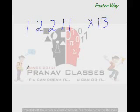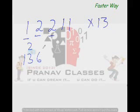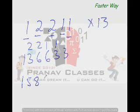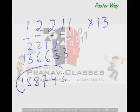What would 12,211 times 13 be? From left to right: 1×13 is 13, 2×13 is 26, 2×13 is 26, 1×13 is 13, 1×13 is 13. Now adding the digits: 1, 3+2 is 5 (next digit sum less than 10, so keep 5), 6+2 is 8, 6+1 is 7, 3+1 is 4, then 3. The answer is 158,743.